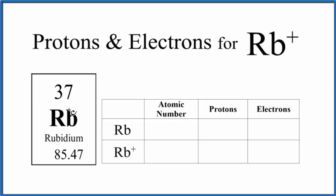The first thing we should note is that on the periodic table, this 37 is the atomic number for rubidium. So 37 is our atomic number, and that's the same for the rubidium ion as well. That's the same for any atom of rubidium.